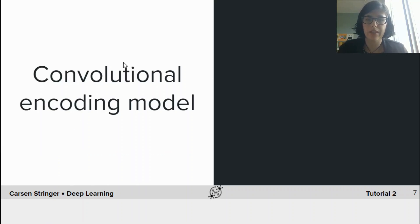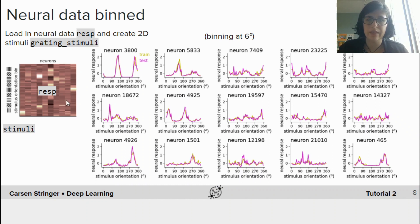Now let's talk about how to build a convolutional encoding model and model the responses of neurons to visual stimuli. So first let's plot many of our neurons' tuning curves.